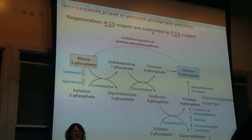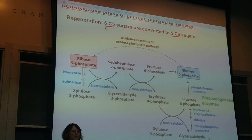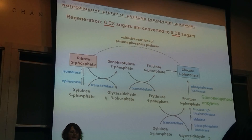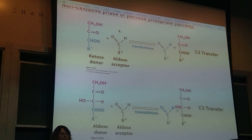The transketolase is a two-carbon transfer and the transaldolase is a three-carbon transfer. You have a donor and an acceptor, moving your two-carbon group over onto the acceptor. With the transaldolase, you're moving a three-carbon group over. You have the ribose-5-phosphate — six of them coming in — and five six-carbon glucose-6-phosphate molecules coming out. So 30 carbons go to 30 carbons. You need to have two glyceraldehyde-3-phosphates — two 3-carbon molecules — to make that C6 glucose-6-phosphate, using the gluconeogenesis enzymes.